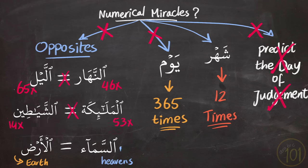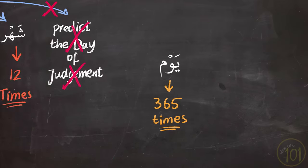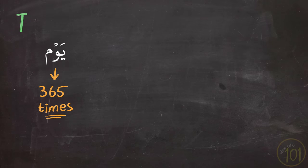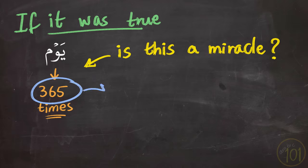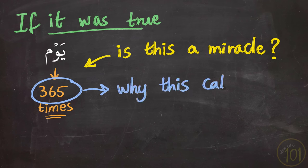But even if someone argued that the word yawm, as an example, is indeed mentioned 365 times in the Quran—regardless of whether this is true or not—does this really make the Quran miraculous? And one more thing: why would the Quran be concerned with mentioning the number of days according to the solar or Gregorian calendar rather than the Islamic, which is 355 days?